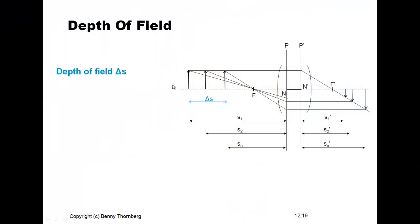Looking at the principal ray diagram, the center object causes an optimal image in focus at the focal plane on the output side. Another object point in front of the camera is projected with optimal focus at a different distance with respect to the principal plane. If we keep our detector at the position where the center object is in optimal focus, then points in front of or behind the optimal focus will be imaged not as a single sharp point, but as a circle of confusion.